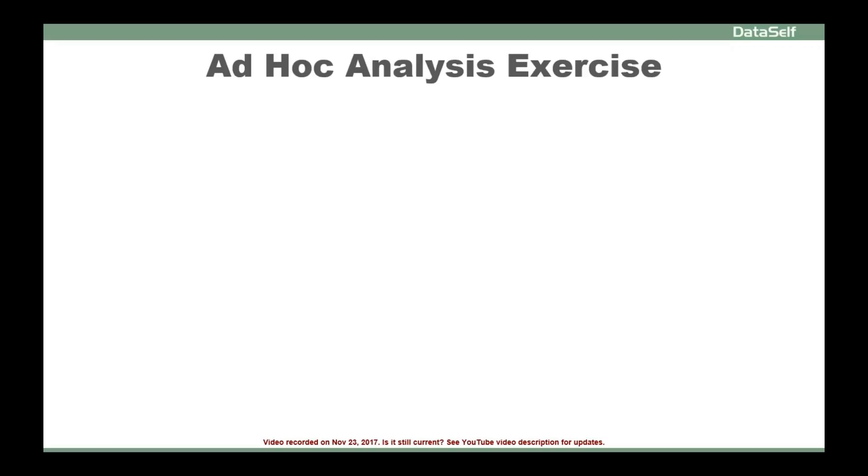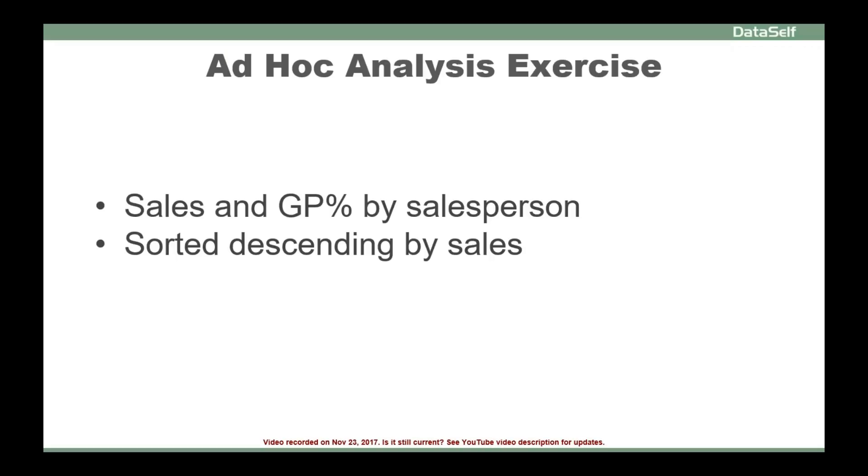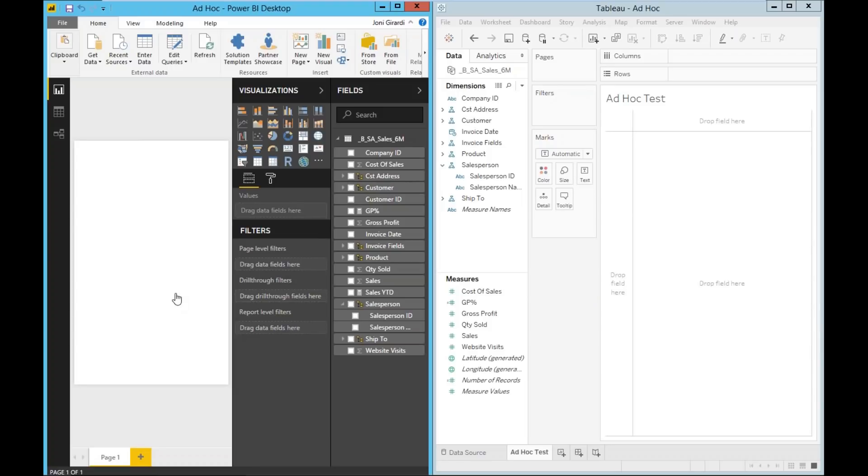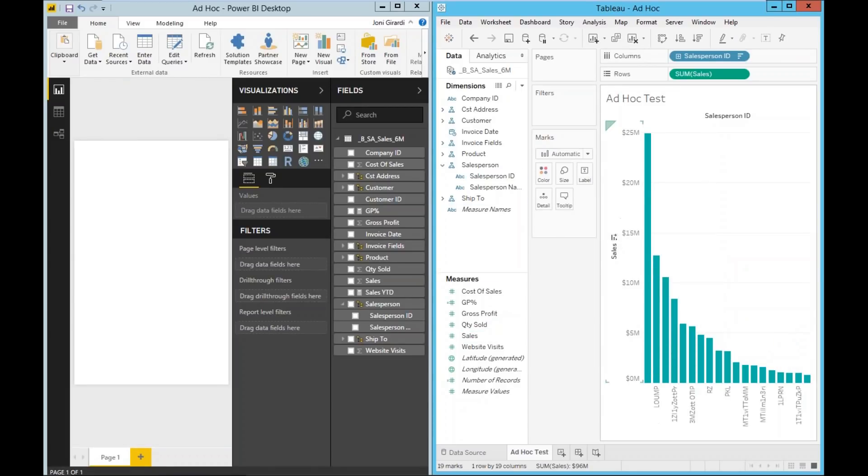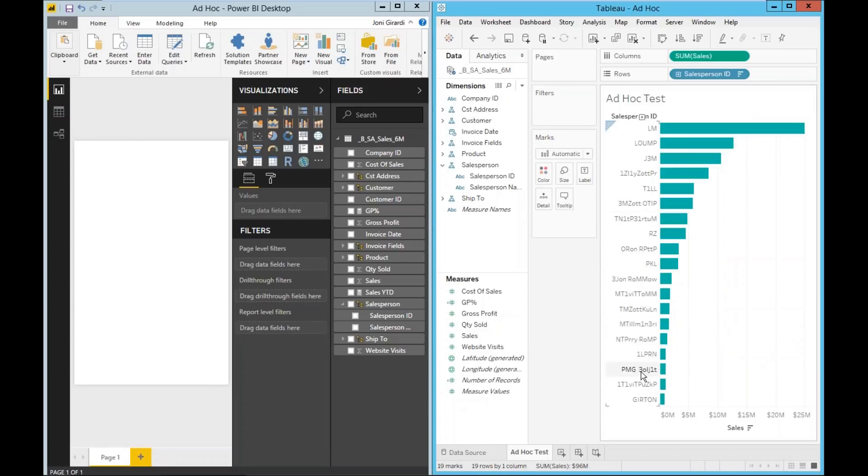We'll start this comparison with an ad hoc analysis exercise to show both products side by side. The purpose of this exercise is to show that both products are really easy to use, but most importantly, to also highlight some differences in the efficiency of ad hoc analysis that plays in the long run. It's a simple query. It will show sales and gross profit percentage by salesperson, sorted in descending order by sales. It will highlight which salespeople are meeting the gross profit goal of 50% and above. So let's take a look. Right here, I have side by side on the left Power BI, on the right Tableau. So I will build this query first in Tableau.